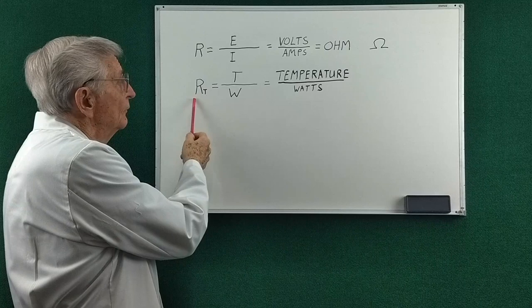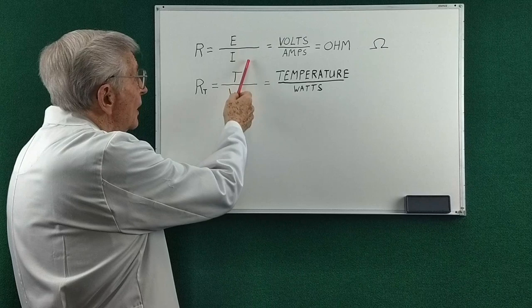We have electrical resistance and we have thermal resistance. Electrical resistance is E over I or volts over amps and we call that an ohm and designate it with this symbol.